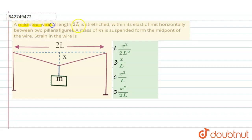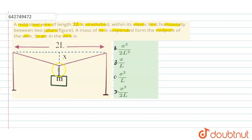A mild steel wire of length 2L is stressed within its elastic limit, fixed horizontally between two pillars as shown in the figure. A mass of small m is suspended from the midpoint of the wire. We have to calculate the strain in the wire. The four options are: (a) x² / 2L², (b) x / L, (c) x² / L, (d) x² / 2L.